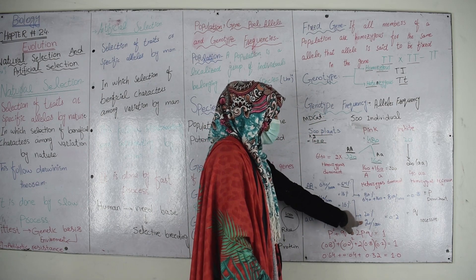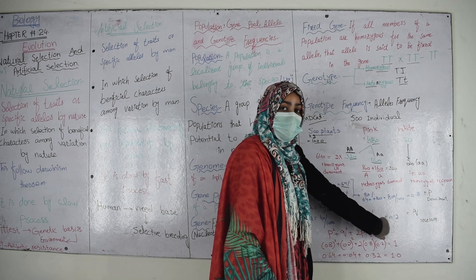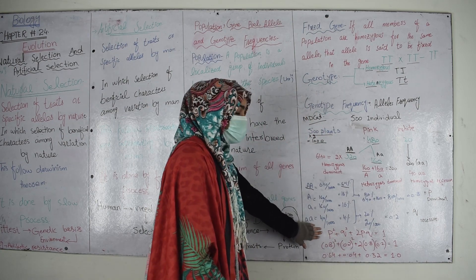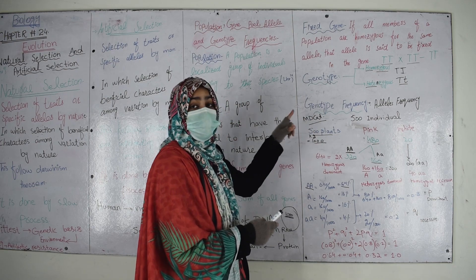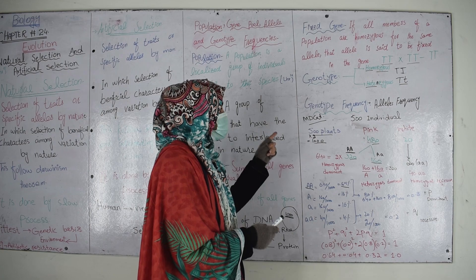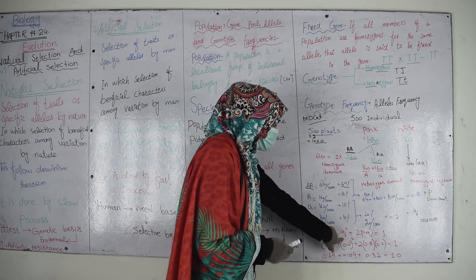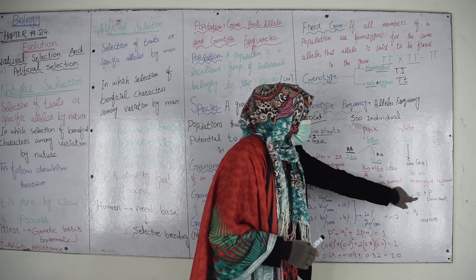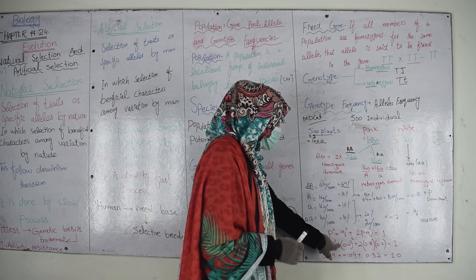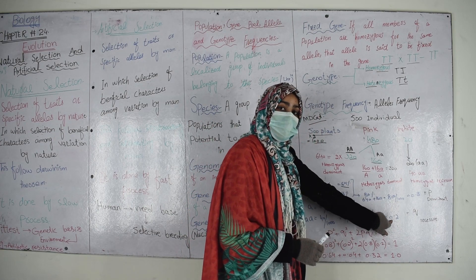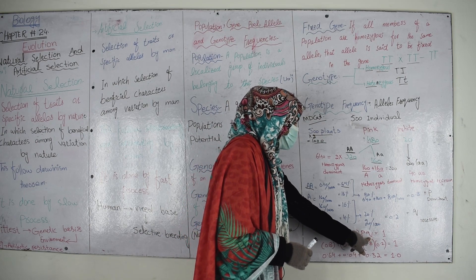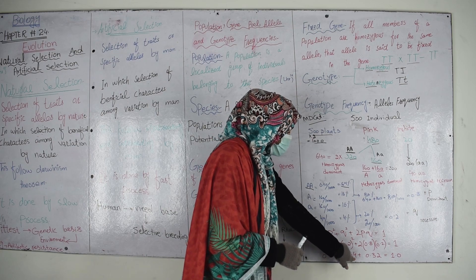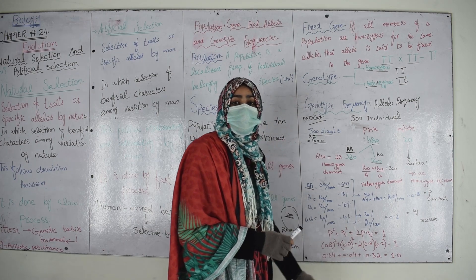Then we have the Hardy-Weinberg formula for genotypic frequency: p² + 2pq + q² = 1. Where p is dominant (0.8) and q is recessive (0.2). So: p² = 0.8² = 0.64, q² = 0.2² = 0.04, and 2pq = 2 × 0.8 × 0.2 = 0.32. All genotypic frequencies together sum to 1.